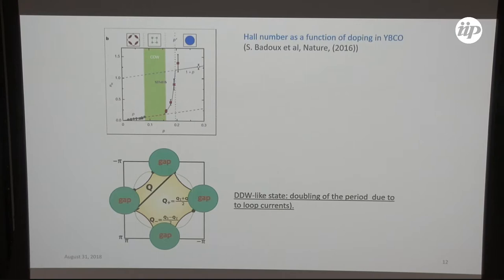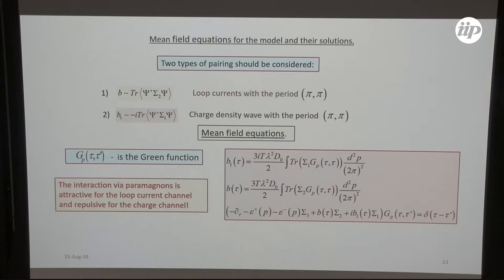If one considers this model, one can consider in mean field approximation two different order parameters. This is loop currents with pi pi and this corresponds to charge density wave with period pi pi. The problem is this current corresponds to attraction in this channel, but this charge density wave corresponds to repulsion.